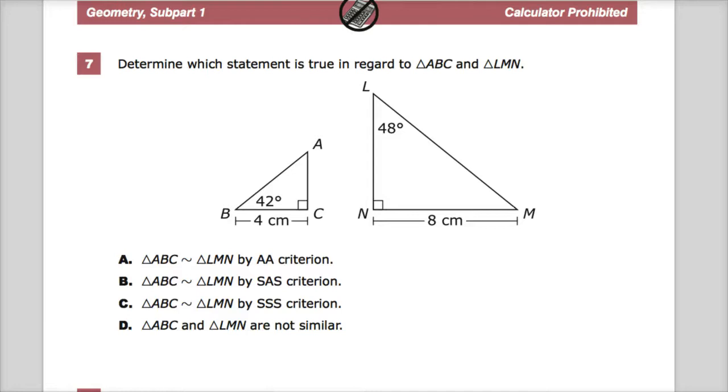Determine which statement is true in regard to triangle ABC and triangle LMN. Triangle ABC is similar to triangle LMN, not just it looks like it. And then on down, and then they're not similar at all.